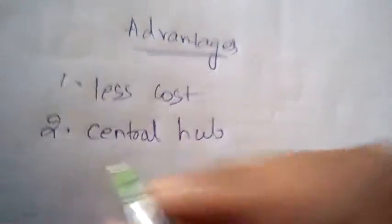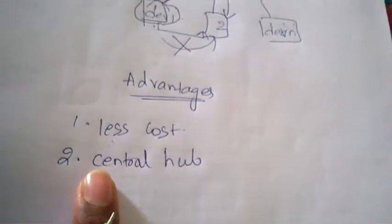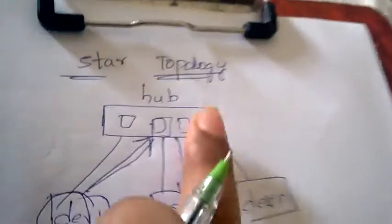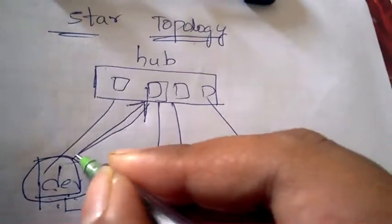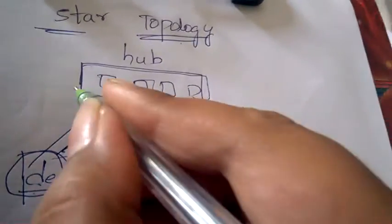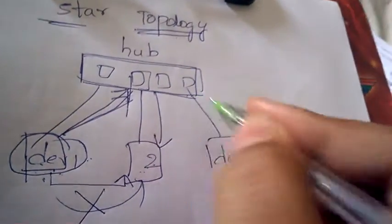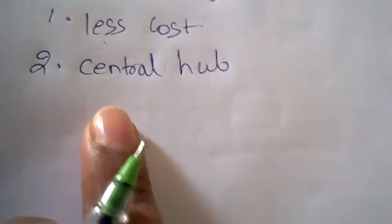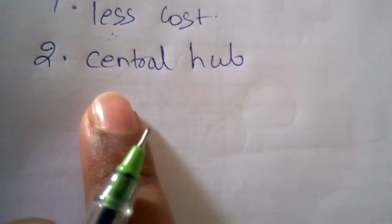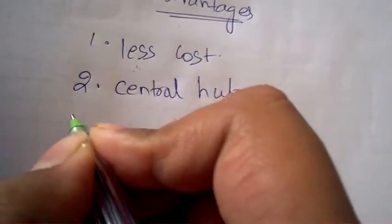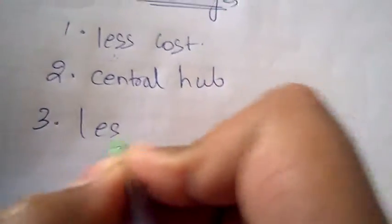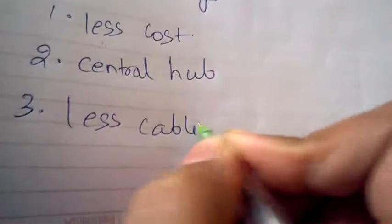The second advantage is the central hub. All information is transferred through the central hub, which takes the responsibility of transferring data to the destination. So the central hub is one of the key advantages of star topology. The third advantage is less cabling.